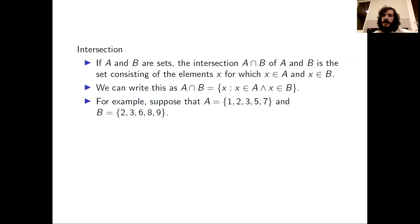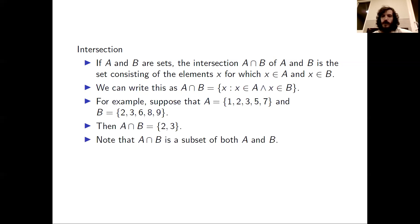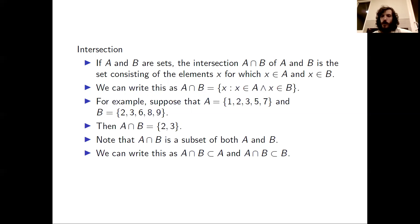We can look at the same sets A and B that we looked at for the union. This time, when we take the intersection of A and B, we only get 2, 3. We can see that the intersection of A and B is a subset of both A and B. We can write that succinctly using the subset notation as we do in the last bullet.